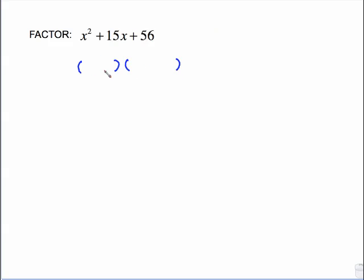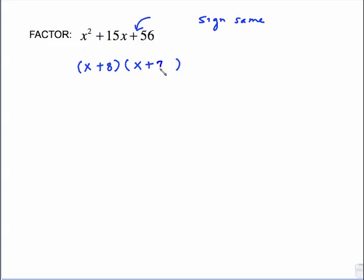Another one. x, x in the front. Take that middle sign and bring it right to the first parentheses. Because the last sign is positive, I know the signs are the same. Since I put a plus in the first parentheses, there's going to have to be a plus in the second. What multiplies to give us 56 and adds to give us 15 would be 8 and 7.